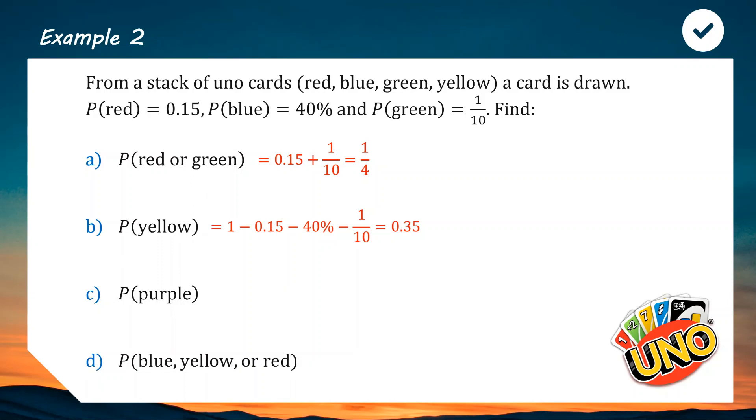Next one's a quick trick question. Probability of purple. The question doesn't mention purple and if you've played, you know there isn't purple cards. That is a probability of 0. It's an impossibility.